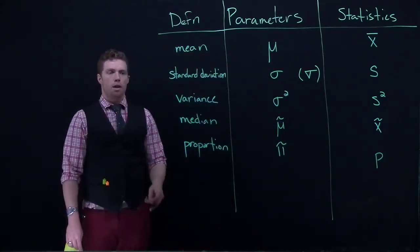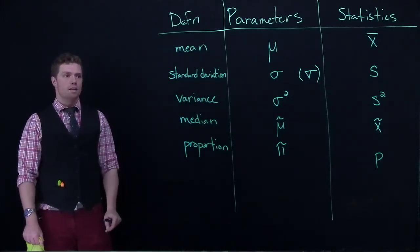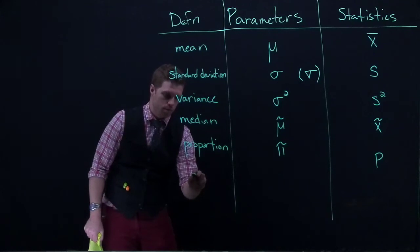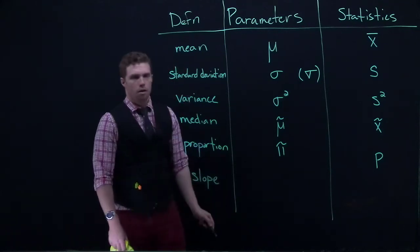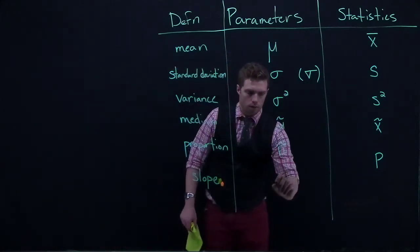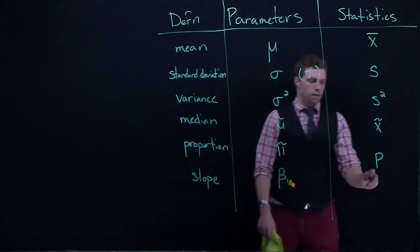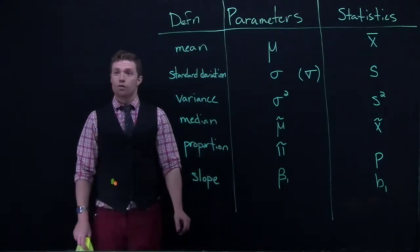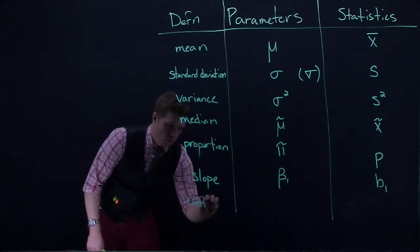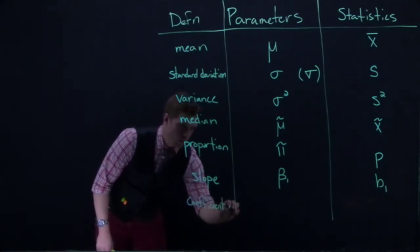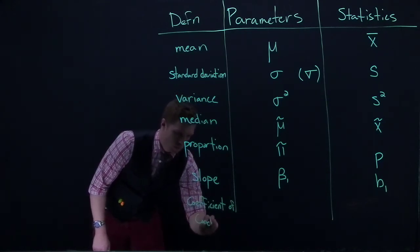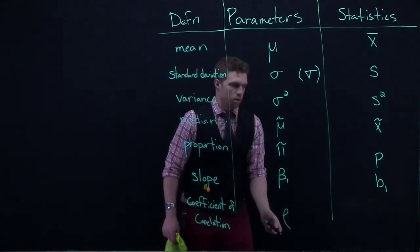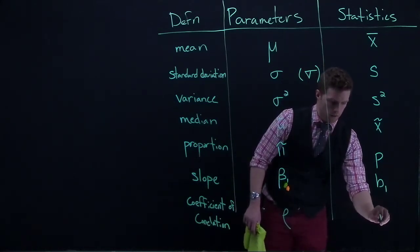Alright, moving on from there, there's a couple others that I'm going to tack on. We're not going to see these until closer to the end of class. But if you see, so this would be the slope. So if we're ever dealing with like a scatter plot, we're looking at a slope, what we are actually measuring, the Greek letter here will be beta 1. And the statistic is going to be B1. And the last one we've got, it's called the Coefficient of Correlation. And the Greek letter is rho. And our statistic is R.